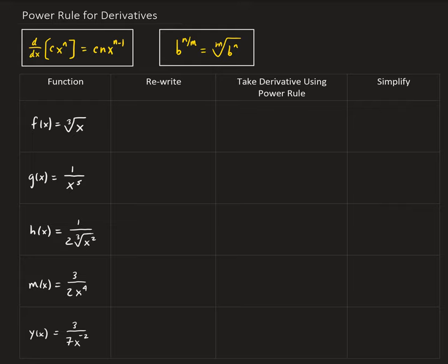In the other box that you see here to the right, that is an algebraic rule. If you have a base raised to a fractional power: b raised to the n over m is equal to the m-th root of b to the power n. That algebraic formula is used to sometimes help us simplify expressions.